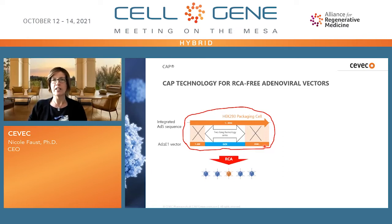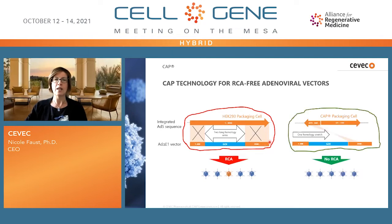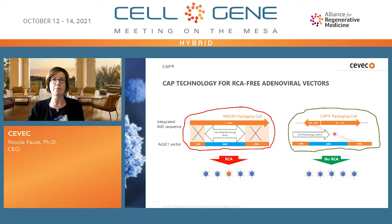We at CEVEC, when we designed our cell platform, took care of this issue. Our CAP cells, which are also a human cell line, have been specifically designed to mitigate this risk. We've done that by designing the AD5 sequences used to immortalize the cells, leading to only one small stretch of homology that does not flank the gene of interest but is only at the 3-prime end, and this really minimizes the risk of RCA formation.